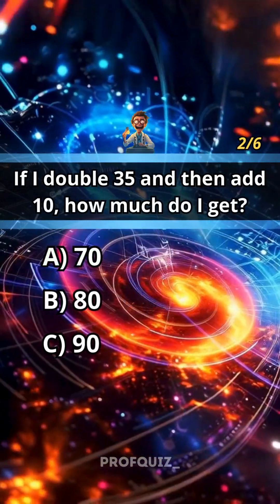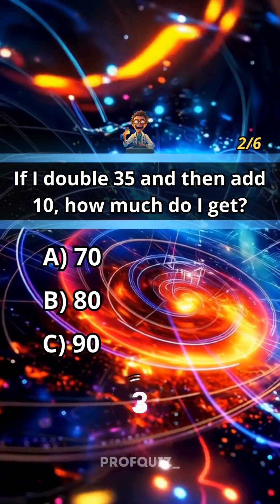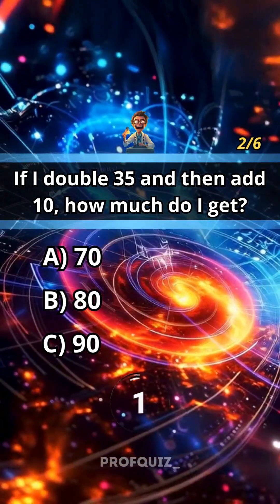If I double 35 and then add 10, how much do I get? Share this quiz with a friend who struggles with math. Answer: B, 80.